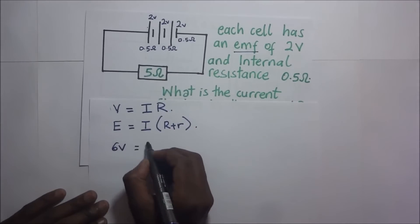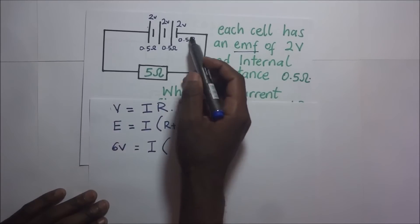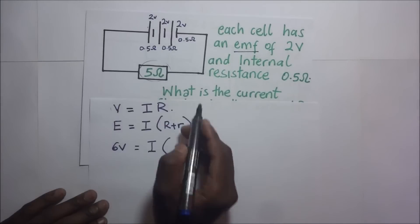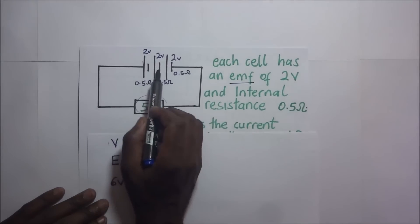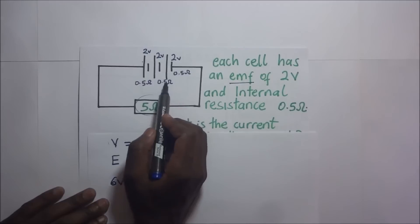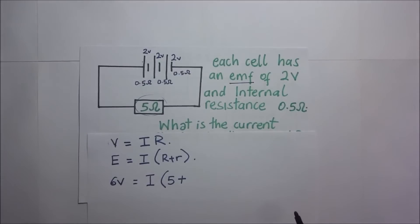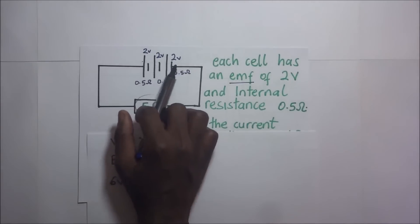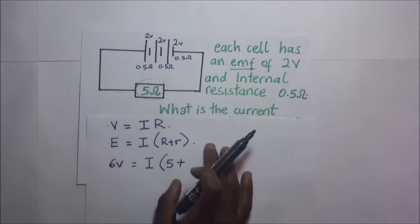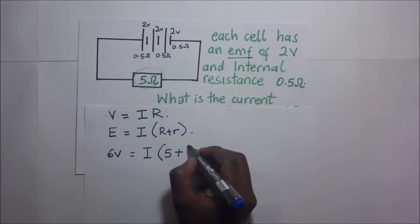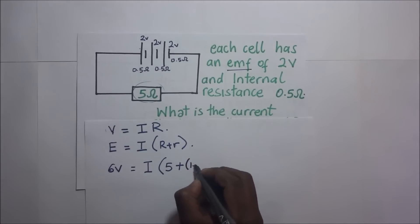The total EMF is 6 volts, and we can add them because the cells are in series. So 6 volts is going to be equal to the total current I times the effective resistance in the external circuit, which is 5 ohms, plus the internal resistance. These are three cells each with internal resistance 0.5 ohms in series, so the effective internal resistance is 0.5 plus 0.5 plus 0.5, which gives us 1.5 ohms.